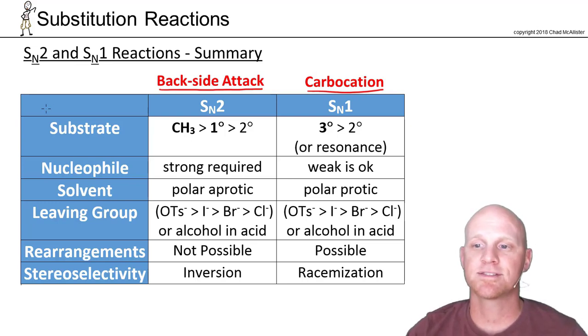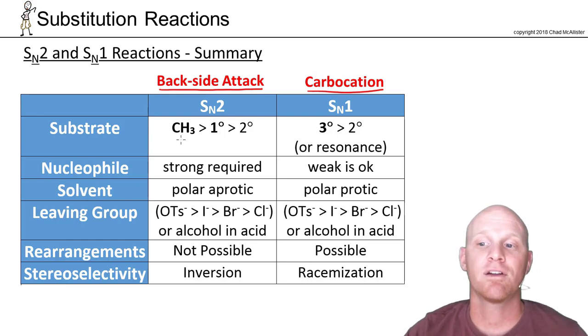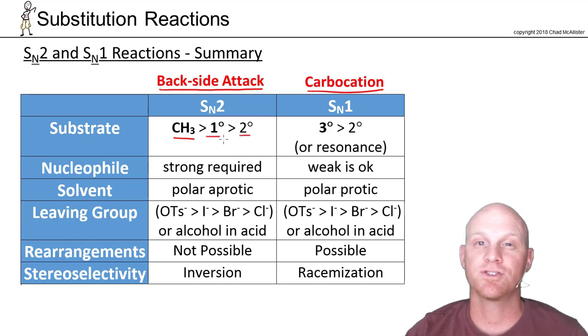The first thing I'll look at is the substrate. For SN2, doing backside attack, I want the least steric hindrance possible. So methyl halides are the fastest, primary is still pretty fast, secondary is kind of slow, and tertiaries don't react at all.